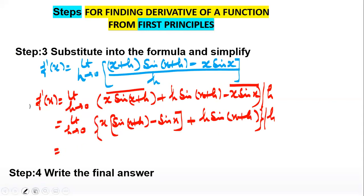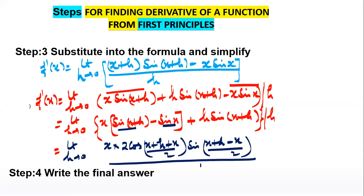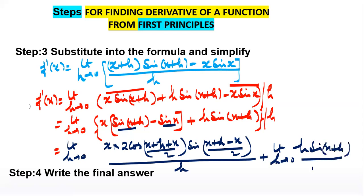Simplifying further, we apply the identity sin(C) - sin(D) = 2·cos((C+D)/2)·sin((C-D)/2) to the term x·[sin(x+h) - sin(x)], divided by h, plus lim(h→0) h·sin(x+h)/h. We then separate the expression into two parts by dividing each term by h.